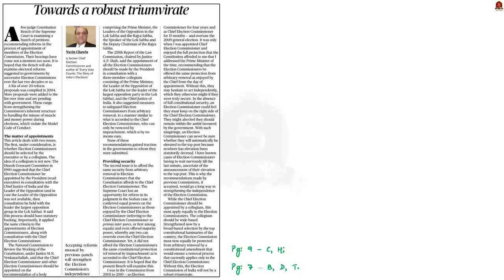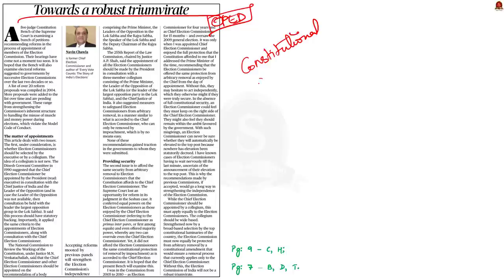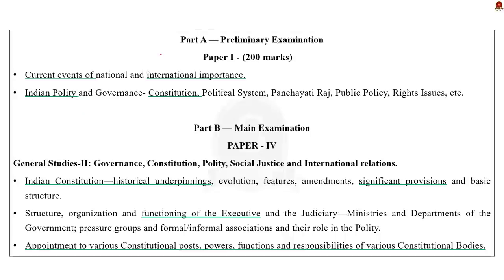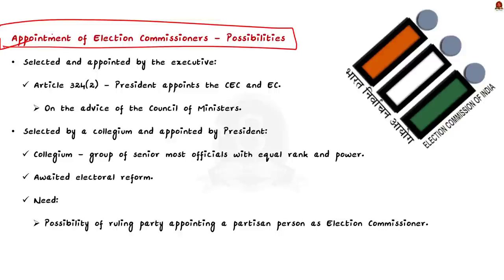Now take a look at this op-ed article. Constitutional positions are always under debate — and this article deals with the important constitutional office of Chief Election Commissioner and Election Commissioners. The author is a former Chief Election Commissioner, who has pointed out two issues that need to be addressed while bringing in electoral reforms. The syllabus relevant to this article is highlighted for reference. The first issue pertains to how the members of the Election Commission of India should be appointed — by the term members I mean both election commissioners and the chief election commissioner.